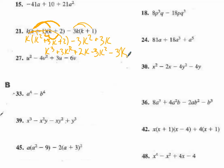Now I can group some similar terms. 3k squared minus 3k squared is 0, so I'll scratch that off. And 2k minus 3k is negative k. So I have k to the third minus k.